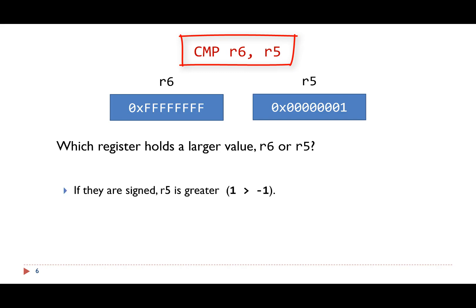When these numbers are signed, register R5 is larger because the value in register R6 is negative 1. When these numbers are unsigned, register R6 is larger.